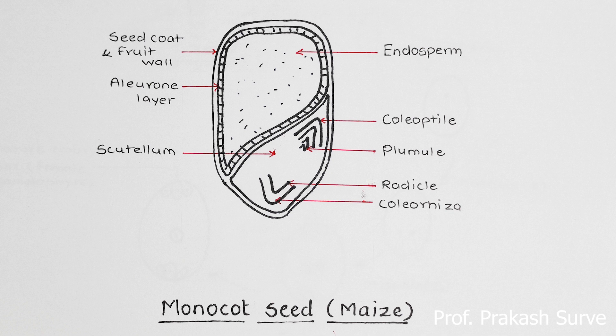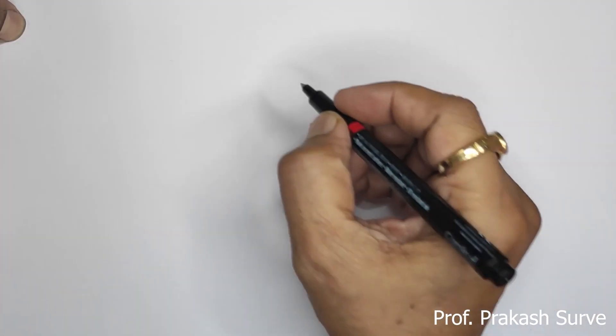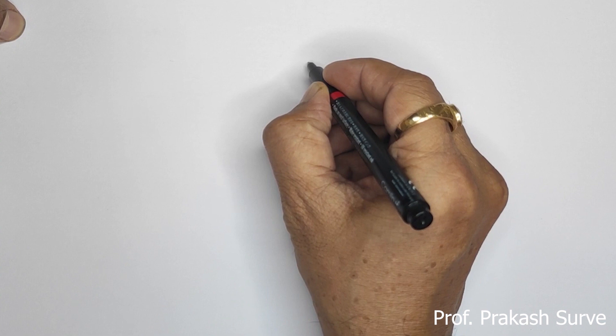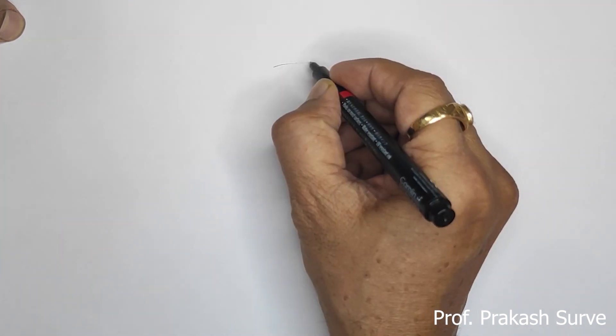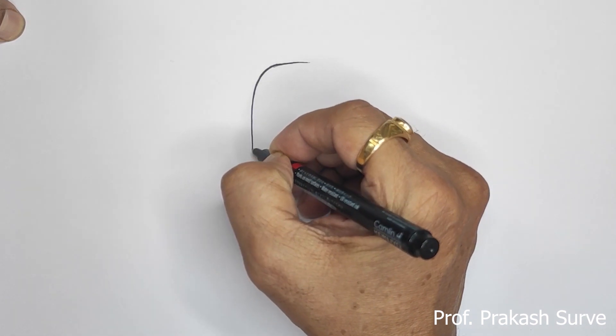Welcome, dear student, to my channel. Today we will see about the monocot seed, that is about the maize seed structure. This is a very easy diagram, so simply just draw the outline first.